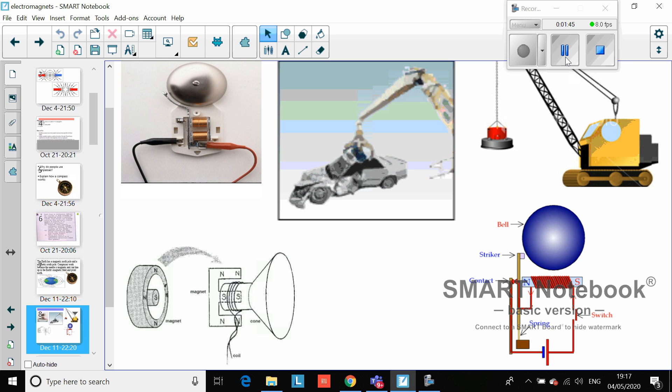Welcome back. As well as the bell, speakers, and crane, you also found a few other uses for electromagnets in our homes and society. You can see they're really extensively used.